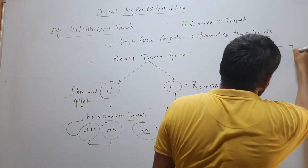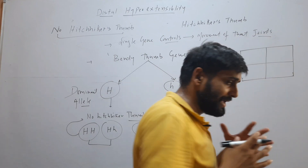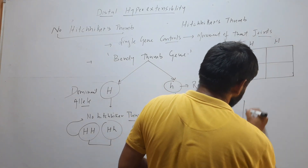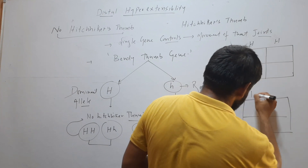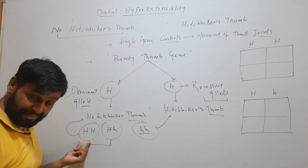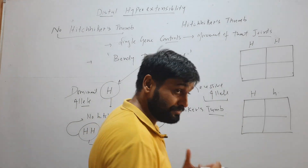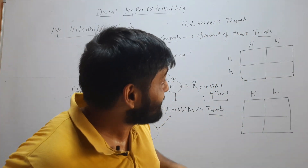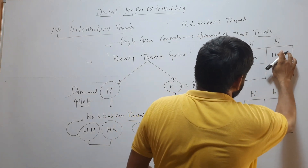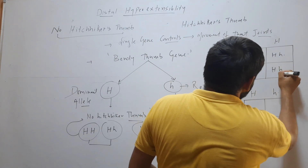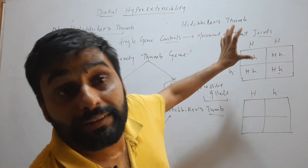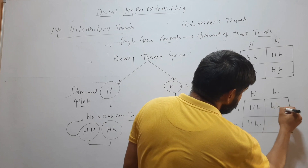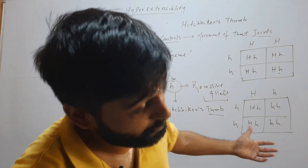Let's look at my case. I have no hitchhiker's thumb, which means I might be capital H capital H (homozygous dominant) or capital H small h (heterozygous). If I am homozygous dominant and my wife has small h small h — meaning she has hitchhiker's thumb — then all our children will have no hitchhiker's thumb. But if I am heterozygous, then half the children will have hitchhiker's thumb and half will have no hitchhiker's thumb.